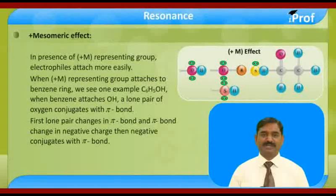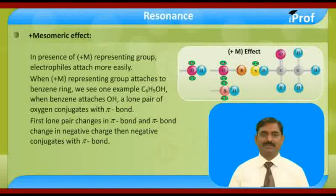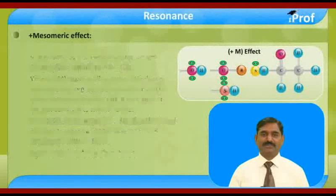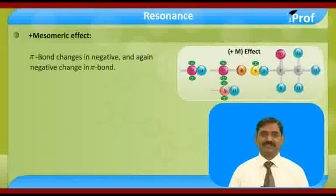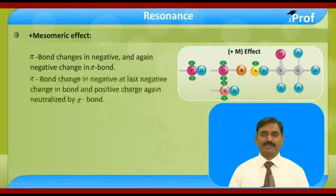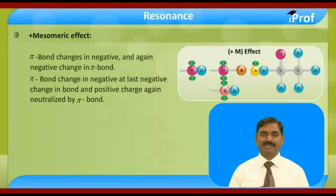First the lone pair changes into a pi bond, then the pi bond changes into a negative charge, then the negative conjugates with the pi bond. Again the negative changes into a pi bond, the pi bond changes into a negative charge, and at last the negative changes into a bond and the positive charge is again neutralized by the pi bond.